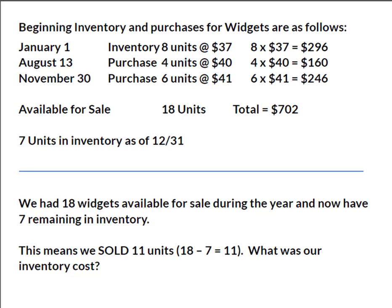At the end of the year we have seven units remaining in inventory. Since we had 18 widgets available for sale during the year and we now have seven remaining, that simply means we sold 11 units. So we need to figure out what the value is of those seven remaining units in inventory.